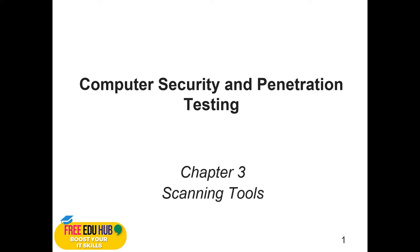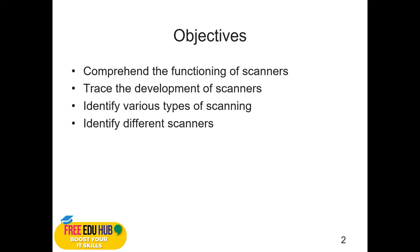Scanning plays an important role when you are trying to protect your own network against external threats. External threats could be anyone trying to find information about you or your organization. This chapter covers famous scanning tools, though not limited to those mentioned. The objectives are: comprehend the functioning of scanners, trace their development, identify various types of scanning, and identify different scanners. You must know these things — only if you are aware can you protect yourself. Most organizations today have intrusion detection systems installed that automatically detect if someone is scanning your network for vulnerabilities.